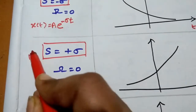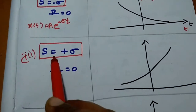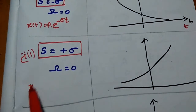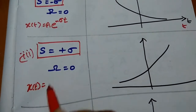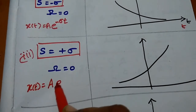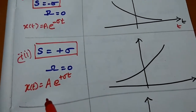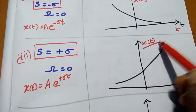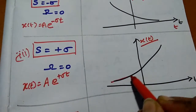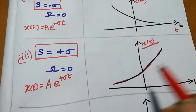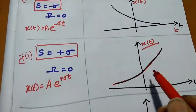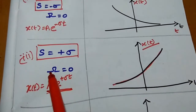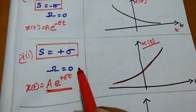Case 3: s = +sigma, with no imaginary part. Then x(t) = A·e^(+sigma·t). The signal is an exponentially growing signal. Since the imaginary part is equal to zero, it is purely real exponential.